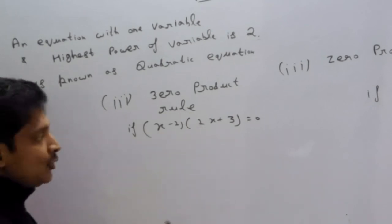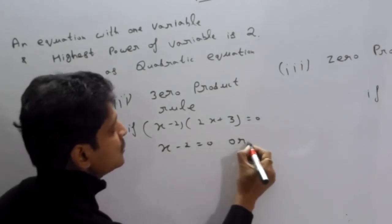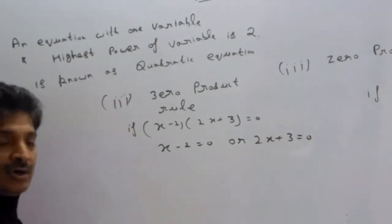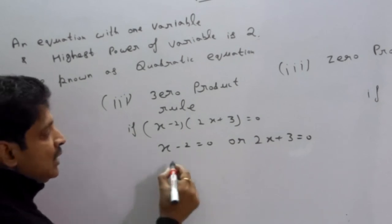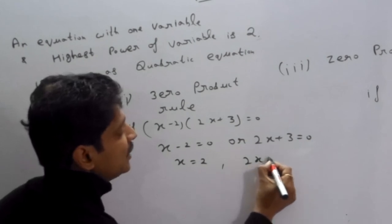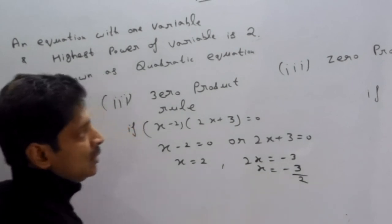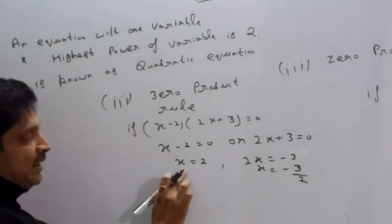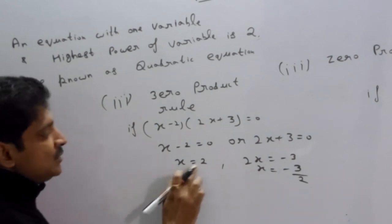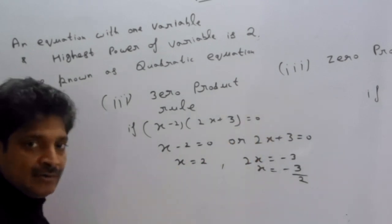Now solve it. Either x minus 2 equals 0, giving x equals 2; or 2x plus 3 equals 0, giving 2x equals minus 3, so x equals minus 3 by 2. We have two roots: x equals 2 and x equals minus 3 by 2. This is the zero product rule.